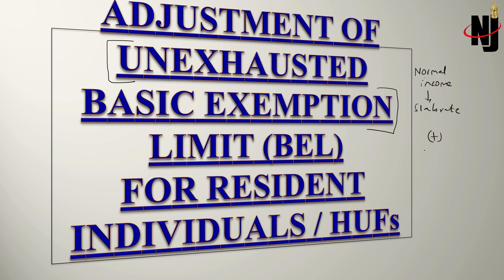If the assessee has any of the three types of special income — long-term capital gain under section 112A, or short-term capital gain under section 111A, or capital gain under section 112 — these are treated differently. Section 112A is taxable at 10% after the first 1 lakh rupees of LTCG. Section 111A STCG is taxable at 15%. Section 112 LTCG is taxable at 20%.